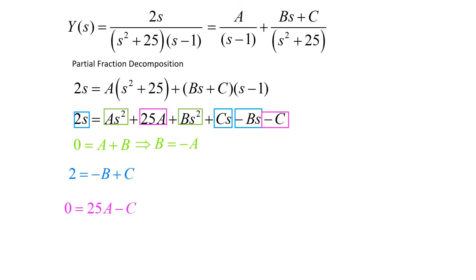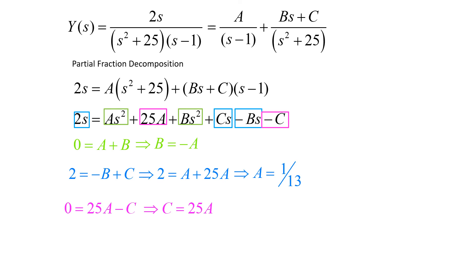If 0 equals A plus B, then B equals negative A. If 0 equals 25A minus C, then C equals 25A. Plugging both into the middle equation: 2 equals negative B plus C becomes 2 equals A plus 25A, so 2 equals 26A, giving A equals 1/13. Therefore B equals negative 1/13 and C equals 25/13. Now we know our coefficients and can rewrite our problem.